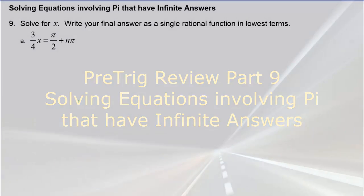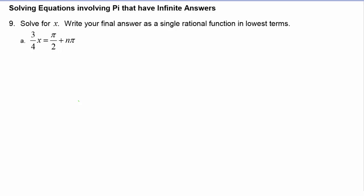So let's take a look at example A. We have three-fourths x is equal to pi over two plus n pi. Now on the right hand side, we're going to want to get a common denominator. We see that that denominator will be two. And in order to achieve that, we're going to need to multiply the n pi times one in the form of two over two, so then this will become pi plus two n pi over two.